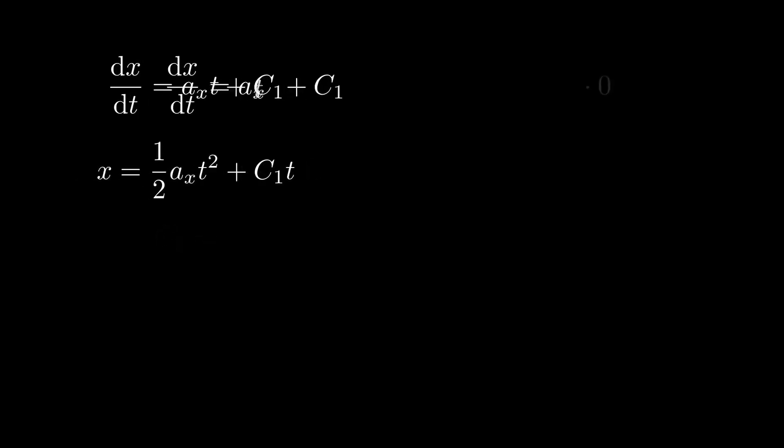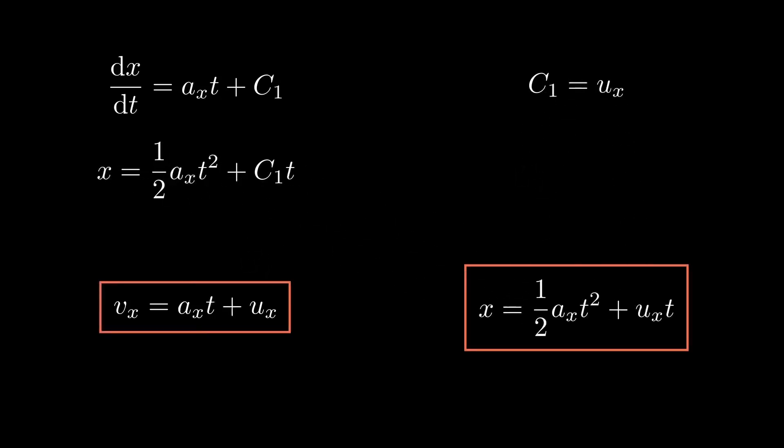On the other hand, from the first equation, if we use our second initial condition that at time t equals zero, we know the velocity of the particle also known as initial velocity of the particle to be u. Solving this equation will give you the value of C1. Putting it back in the first equation will give you this. And we know that dx over dt is nothing but velocity v. So that happens to be vx equals ax t plus ux. Putting the value of C1 in the second equation will give you this. And this is x equals half ax t squared plus ux t.